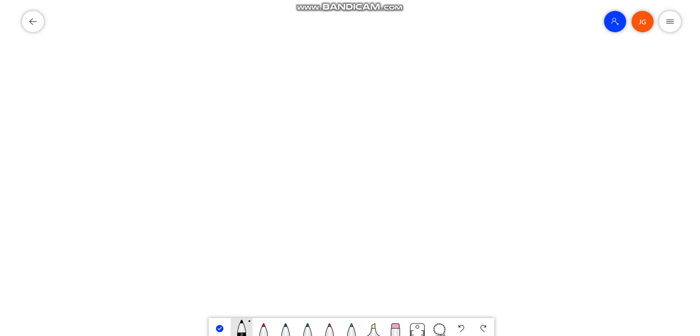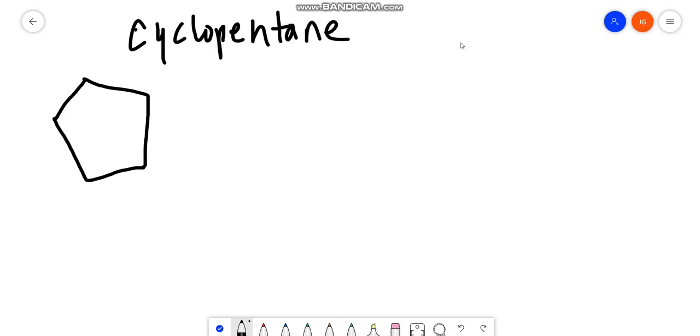Let's say we have a molecule that looks like this. So this is cyclopentane. And we perform a chlorination reaction. So we are going to add a chlorine atom.